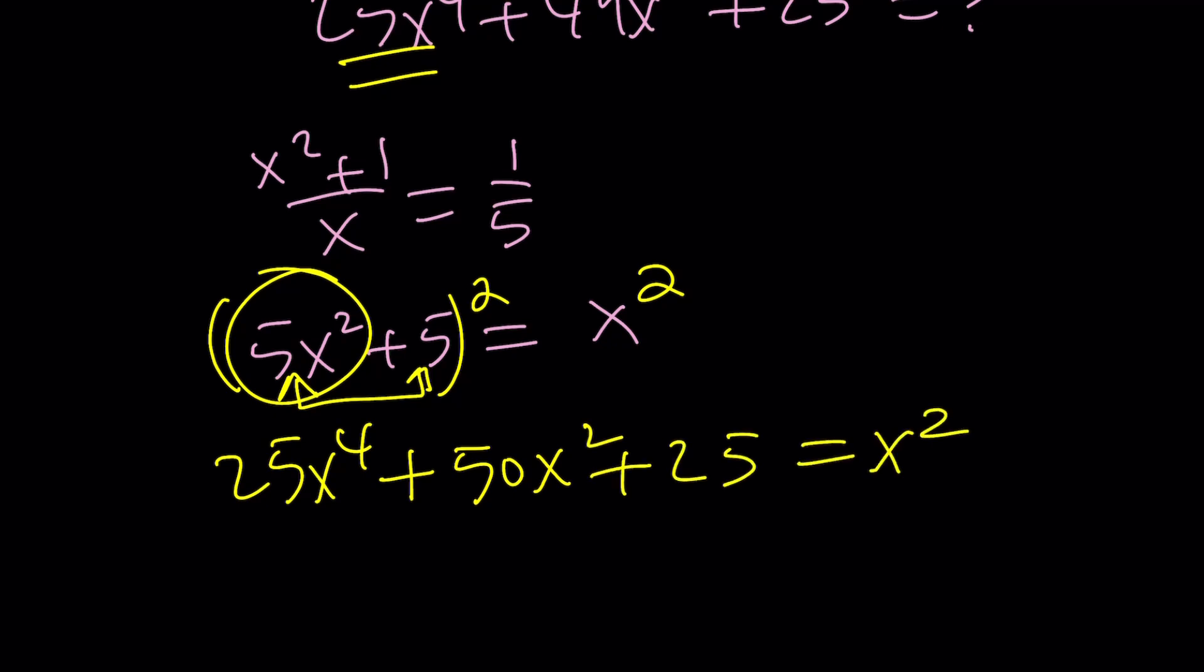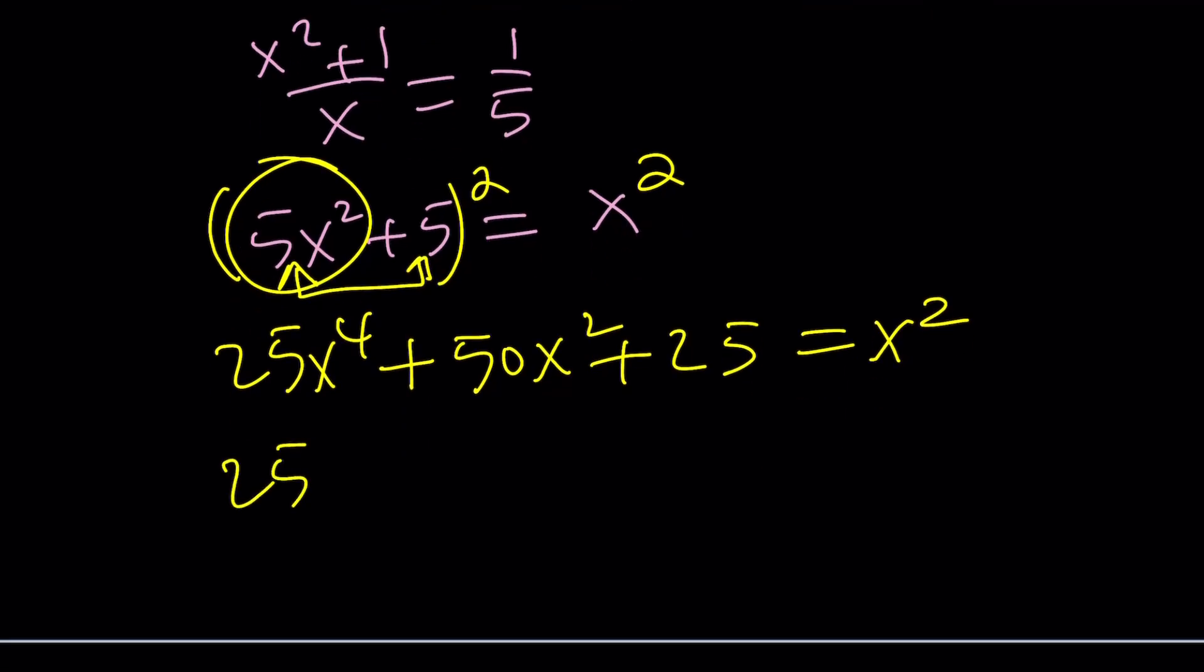And guess what happens? If you subtract x squared from both sides, you get 25x to the fourth plus 49x squared plus 25 equals zero. And that's exactly what we were looking for.